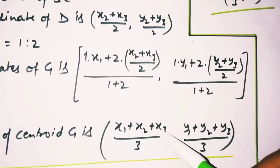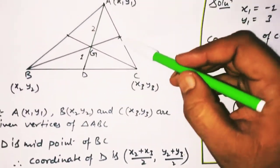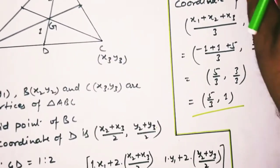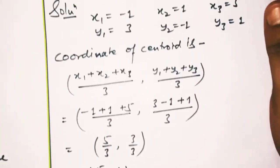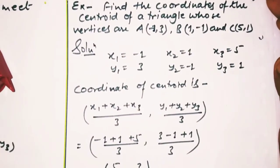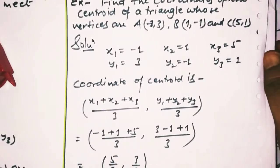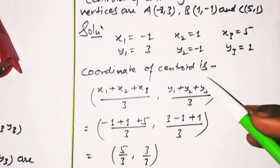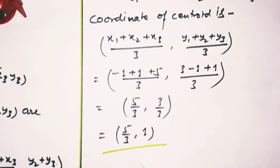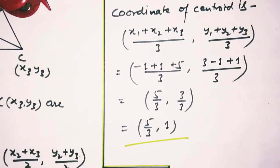Centroid nikalne ka formula: (x1+x2+x3)/3, (y1+y2+y3)/3 — agar vertices triangle ke x1,y1, x2,y2 aur x3,y3 hain. Ek numerical dekh lete hain: Find the coordinates of the centroid of a triangle whose vertices are (−1,3), (1,−1) and (5,1). Humne x1,y1, x2,y2, x3,y3 likh diya. Centroid ke formula mein values put kar di, solve kar liya — answer aa gaya. Okay students, now ab hum exercise solve karenge.